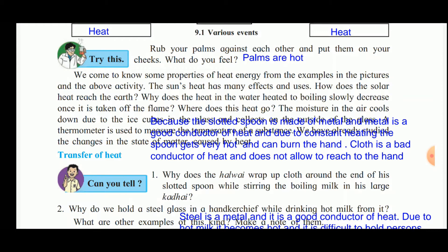A thermometer is used to measure the temperature of a substance and to find out the fever of a person. The thermometer contains mercury. When the bulb of the thermometer is placed in the mouth of a person having fever, the mercury rises up inside the thermometer and we can read the temperature or fever of the person.